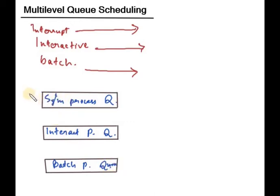And suppose System Processes Queue has the highest priority. And this has medium priority. And Batch Process has lowest priority.